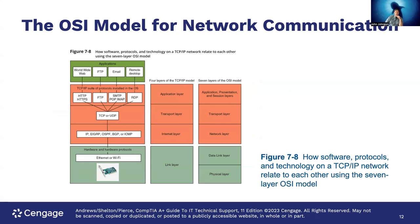Here's the OSI model for network communications — the big abstract model — and you can draw comparisons to TCP/IP. At the highest level, the TCP/IP application layer corresponds to the OSI's three layers: application, presentation, and session. The transport layers are equivalent. The TCP/IP internet layer is equivalent to the OSI network layer. The TCP/IP link layer — the hardware layer — corresponds to the OSI data link and physical layers combined. On the Network+ exam there are a lot of questions about this, though it may not appear heavily on the A+ exam.